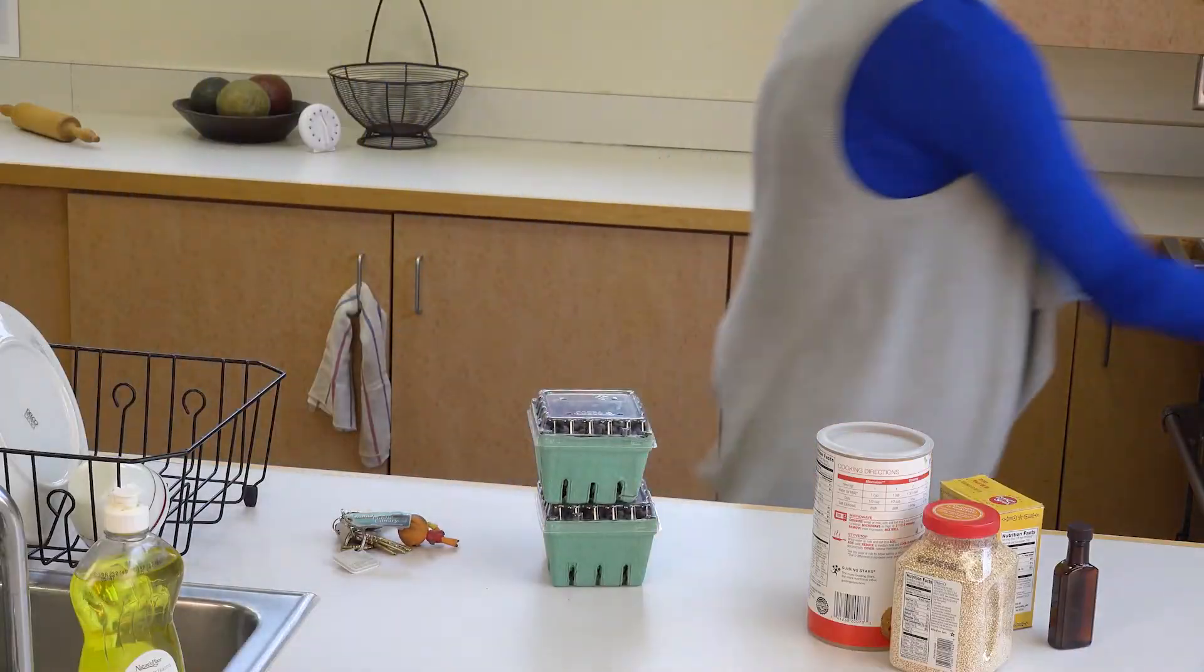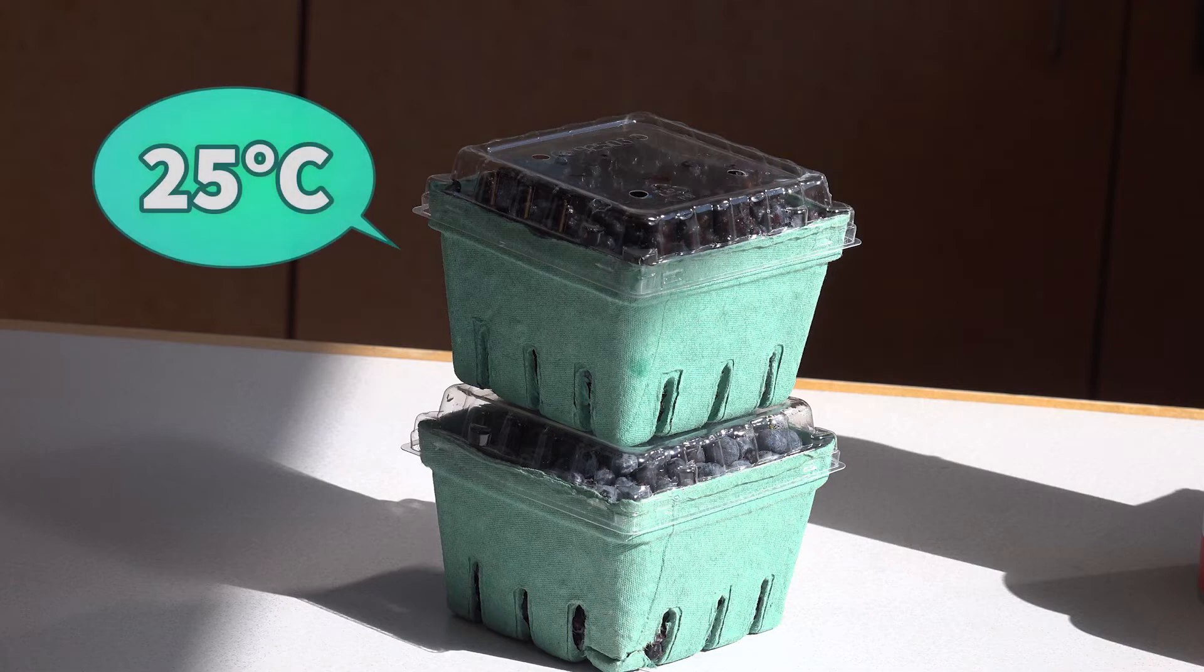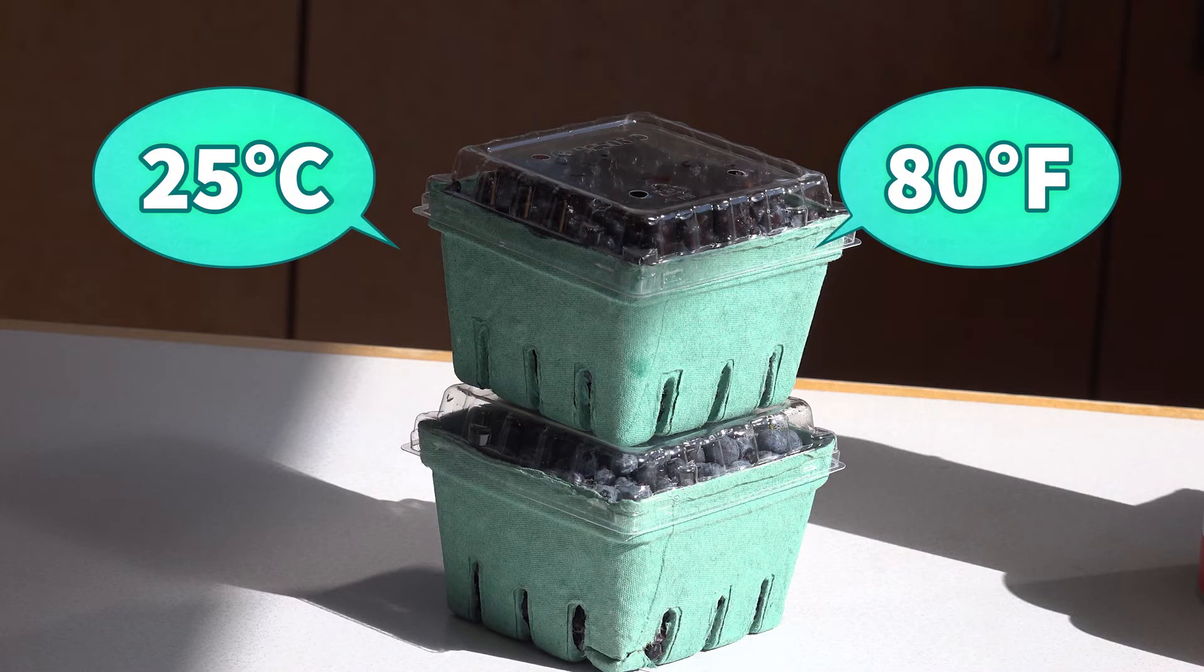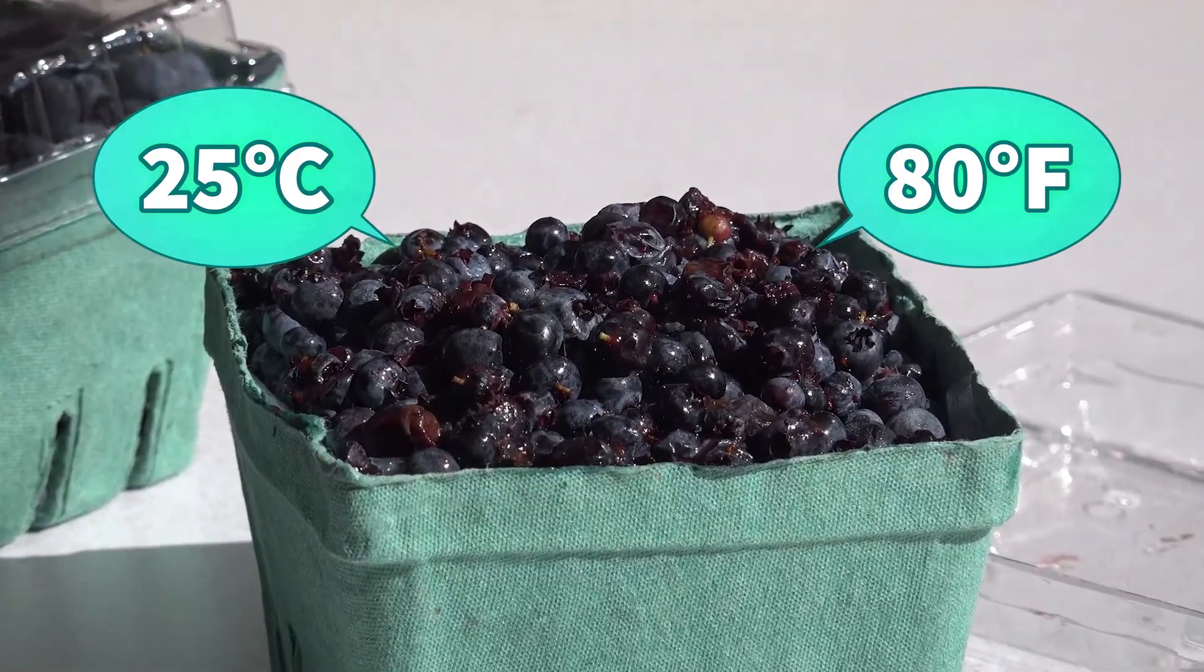The bottom line is, when perishable food reaches the ideal growth temperatures for bacteria, around twenty-five degrees Celsius or eighty degrees Fahrenheit, and stays at that temperature for several hours, it will go bad.